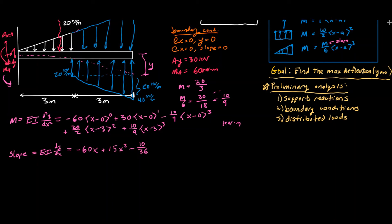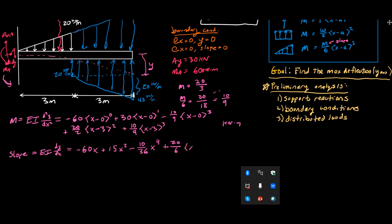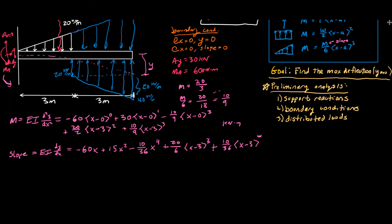Then we need to integrate the 20 over two term - that's 10, or we can leave it as 20 over six times ⟨x minus three⟩ to the third power. And then we have the triangular load again - the same deal - giving plus 10 over 36 times ⟨x minus three⟩ to the fourth power. And integrating the constant gives us plus C₁.